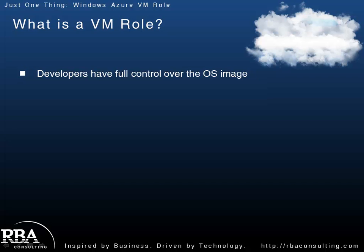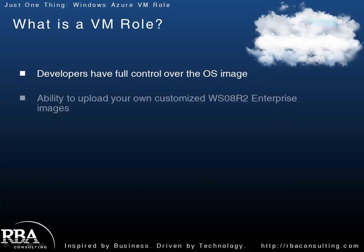In a couple of the prior episodes we talked about web roles and worker roles. In those roles you don't really get control over the OS, though there's a lot you can do and you do have admin access to those machines. For example, with the web role I can take complete control of IIS and script out anything I need. But with a VM role I get complete granular control over the OS image.